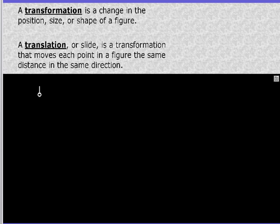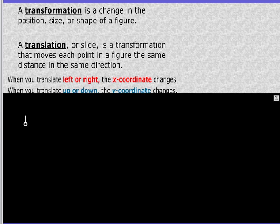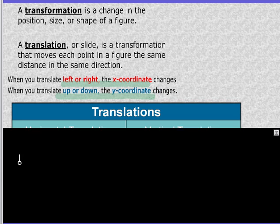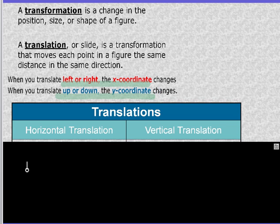Translation, or slide, is a transformation that moves a point in a figure the same distance in the same direction. So this is like a horizontal slide or a vertical slide. When you translate left or right, the x-coordinate changes. And when you translate up or down, the y-coordinate changes. Which makes sense. X is your horizontal coordinate. Left or right is horizontal slide. Up and down is a vertical slide.